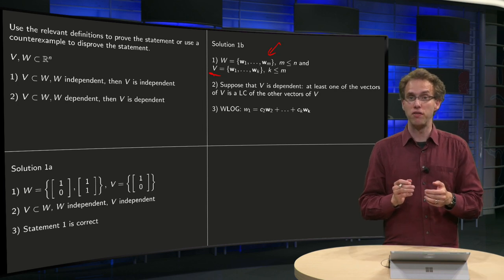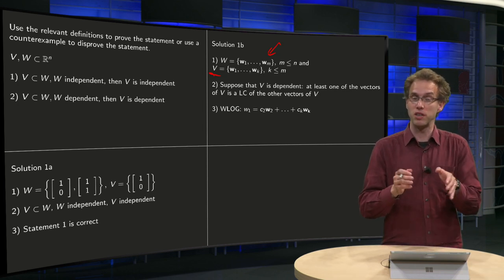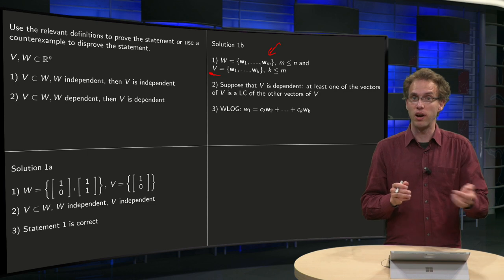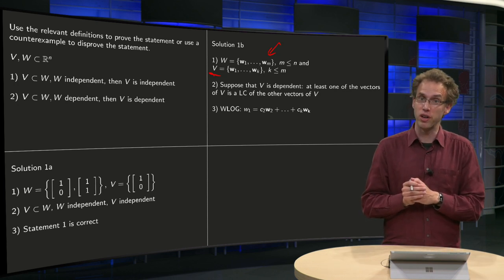Even though of course V is smaller than W, so it contains less vectors, so k has to be smaller equal than m.